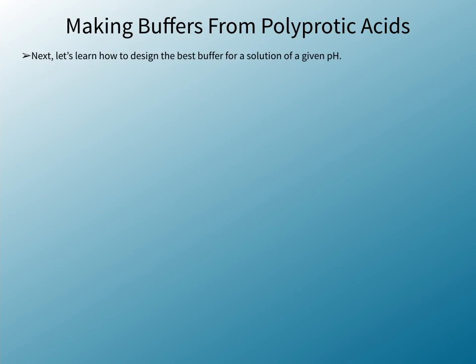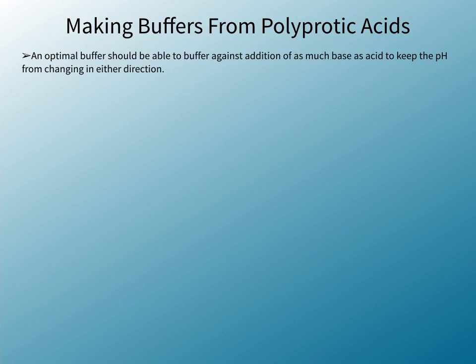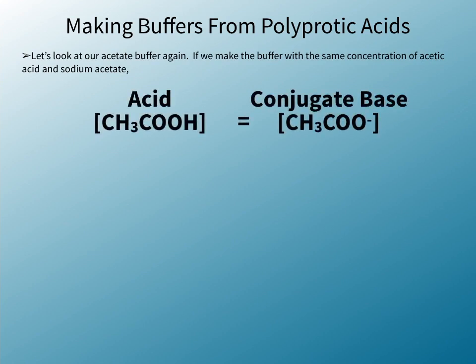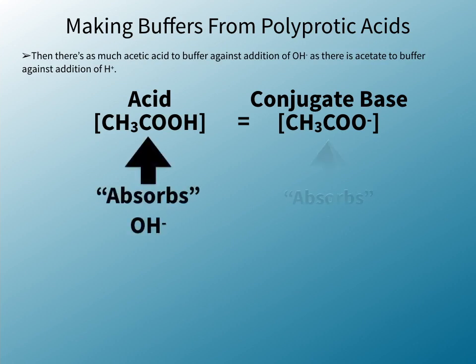Next, let's learn how to design the best buffer for a solution of a given pH. An optimal buffer should be able to buffer against addition of as much base as acid to keep the pH from changing in either direction. If we make the acetate buffer with the same concentration of acetic acid and sodium acetate, then there's as much acetic acid to buffer against the addition of OH⁻ as there is acetate to buffer against addition of H+.